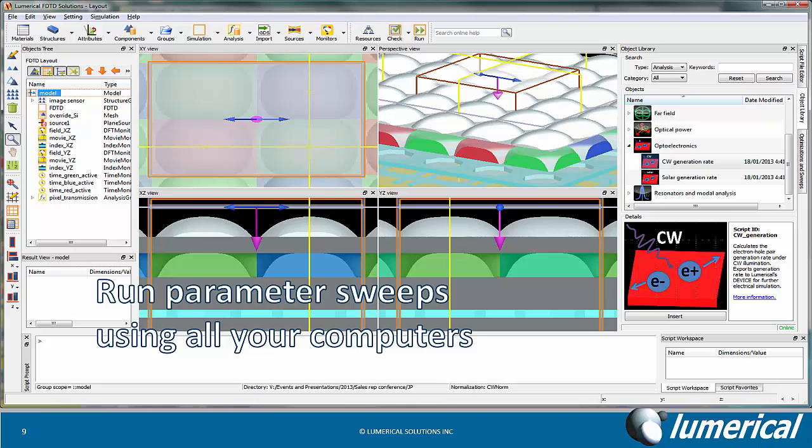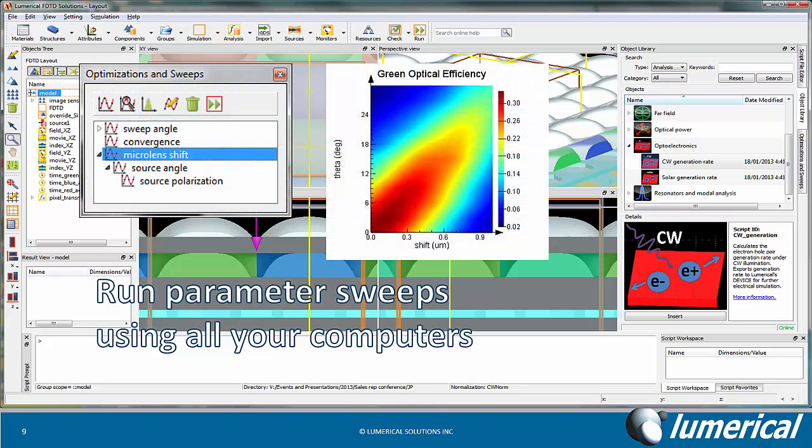The built-in parameter sweep framework can be used to run parameter sweeps using all available computing resources. For this CMOS image sensor, we can study the efficiency of the design as a function of microlens shift and the source angle.